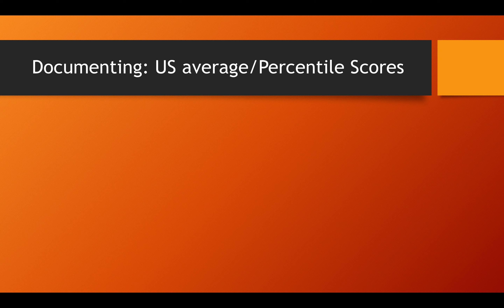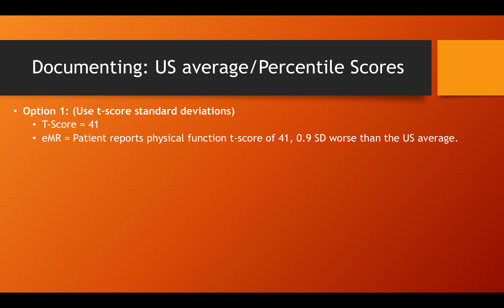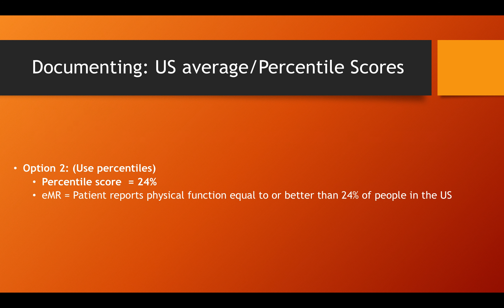So how would we use all this information to document a patient's status in the E-record? I would encourage you to put something like: patient reports physical function T-score 41, 0.9 standard deviations worse than the US average. This includes both the absolute value and the variance from the US average. The other option is to use percentile scores, and here you would pick one — whether the US average, age-adjusted, or gender-adjusted. In this example, using the US average, the E-record entry would be: patient reports physical function equal to or better than 24% of people in the US.